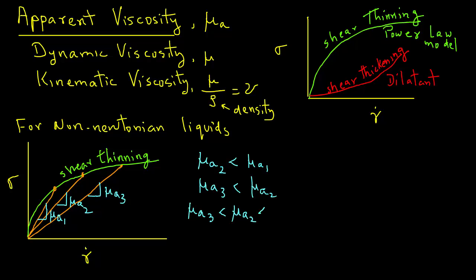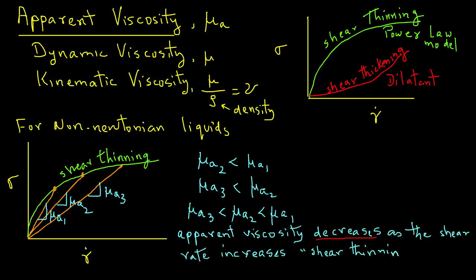We have here a case where the apparent viscosity, mu A, decreases as the shear rate increases. In other words, it's shear thinning.